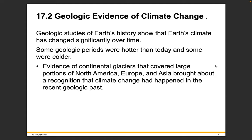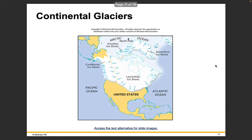Geologic studies of Earth's history show that Earth's climate has changed significantly over time — some geologic periods were hotter than today and some were colder. Evidence of continental glaciers that covered large portions of North America, Europe, and Asia brought about a recognition that climate change had happened in the recent geologic past, during the Ice Age. Michigan, for example, was at one time completely covered by the Laurentide Ice Sheet during the last Ice Age.